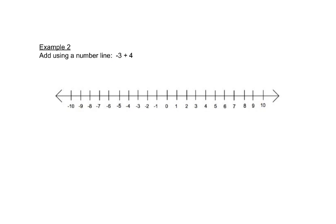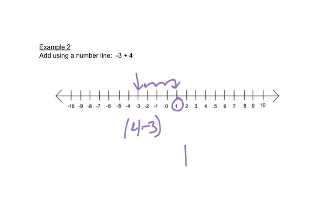In this problem, we're starting at negative three because that's our first number, and then we're adding four. The four is positive, so we're going to move four units to the right, and we end up at one. Because those signs are different, we're actually subtracting four minus three and we get one. The bigger number was the four and it was positive, so our answer is a positive one. If the negative number was bigger, then our answer would be negative.